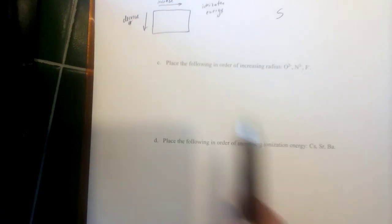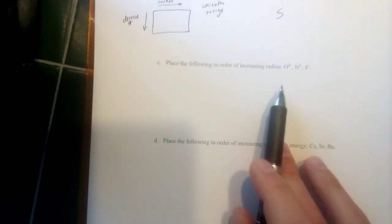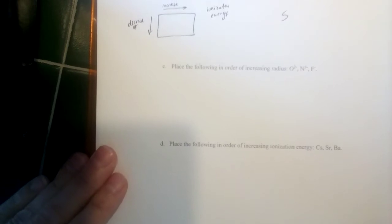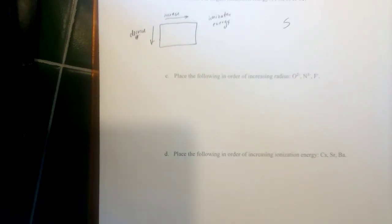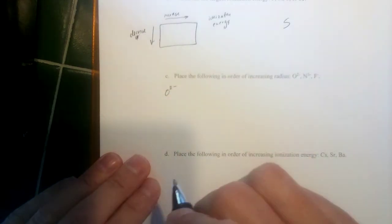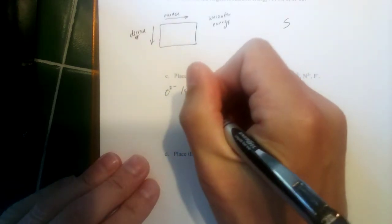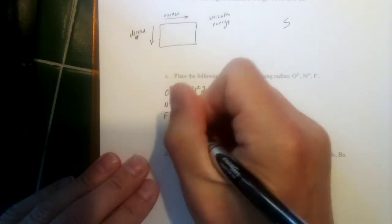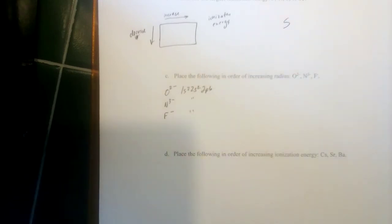Part C asks us to place ions in order of increasing radius. With ions, the first thing to look for is whether they have the same electron configuration. O²⁻ is 1s² 2s² 2p⁶, and N³⁻ and F⁻ share that same configuration. The term for atoms or ions with the same electron configuration is isoelectronic.